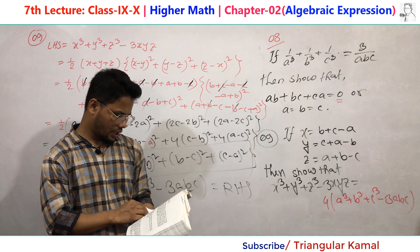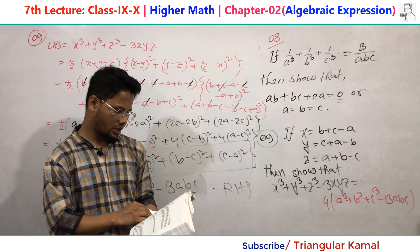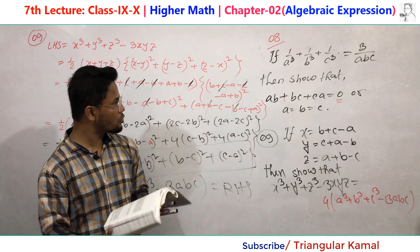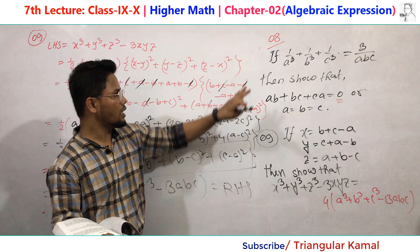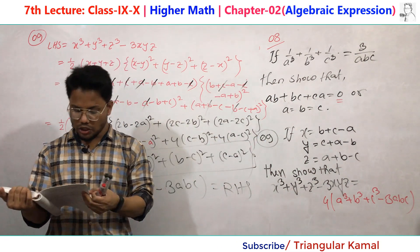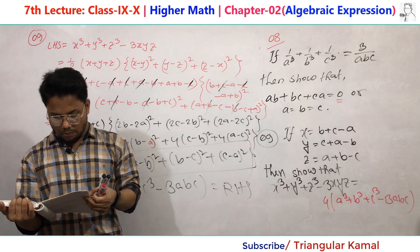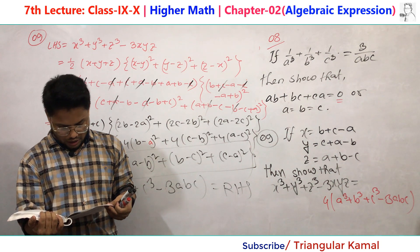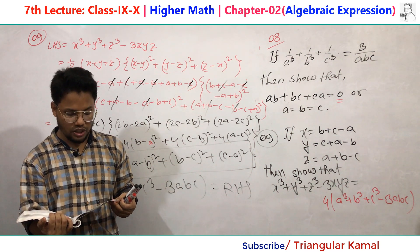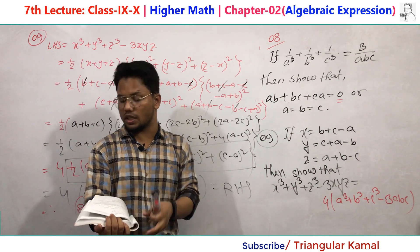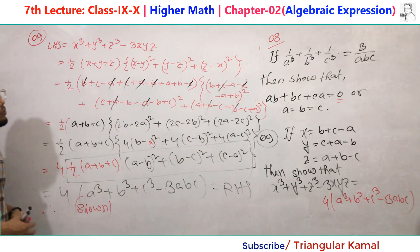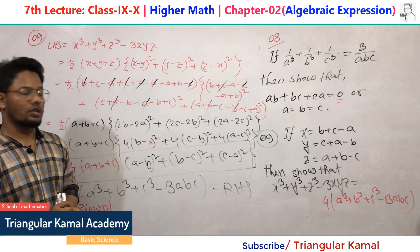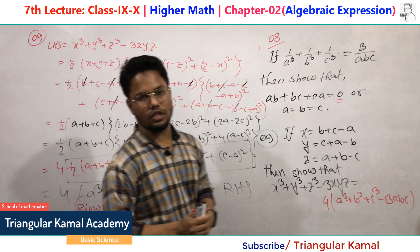Number 12 and number 13 are two creative questions, and both creative questions are based on number 8 and number 9. If you can do number 8 and number 9 properly, you can complete creative question 12C and question B from number 13. We will meet again in the next tutorial. If you have any questions, please comment. Thank you very much. Assalamualaikum warahmatullahi.